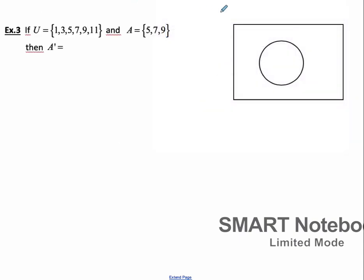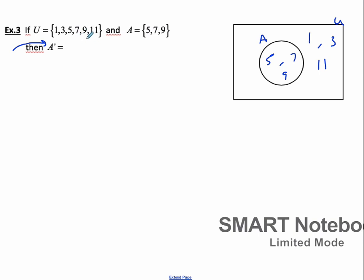Next we have this symbol, which means the complement of a set — also read as 'not A' — so all the elements that are not in A. So we have the universal set is all these numbers, and then A we represent with a circle, and this is the universal set. A has 5, 7, and 9. And then everything that's not in A is out here: 1, 3, 11. So the set not A is 1, 3, 11.